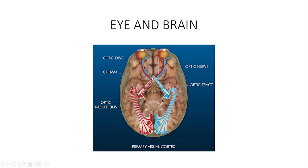There are three types of chiasmas: the central chiasma, the pre-fixed chiasma, and the post-fixed chiasma. The central chiasma is found in 80 percent of the general population, the pre-fixed chiasma in 10 percent, and the post-fixed in 10 percent. Sitting on top of the chiasma are the third ventricle and the hypothalamus, and sitting under the chiasma is the sella turcica containing the pituitary gland.